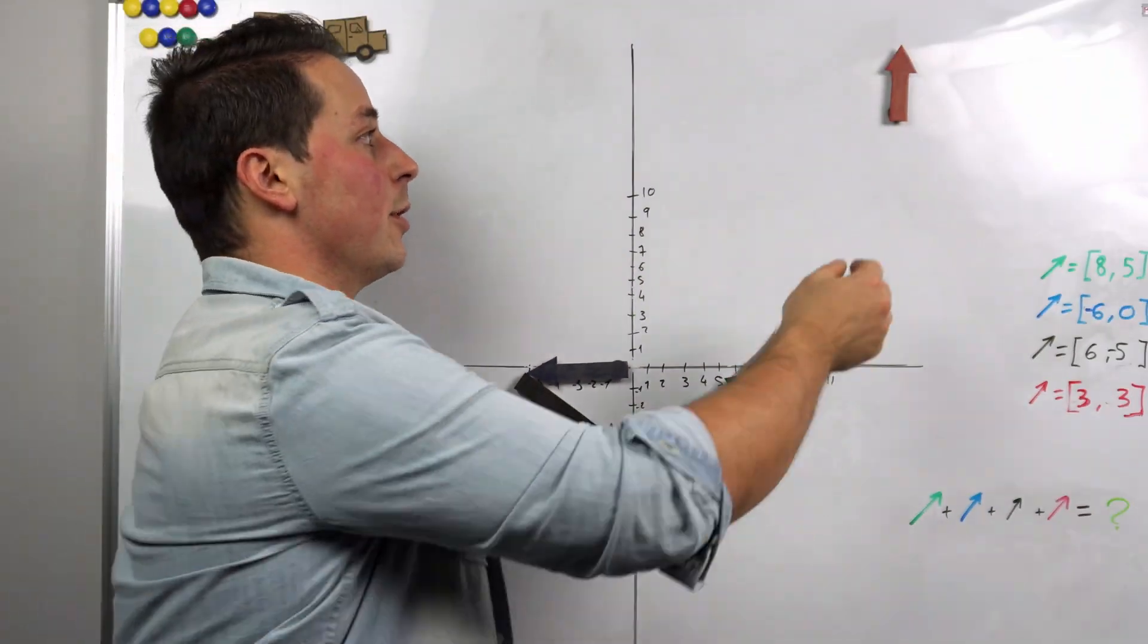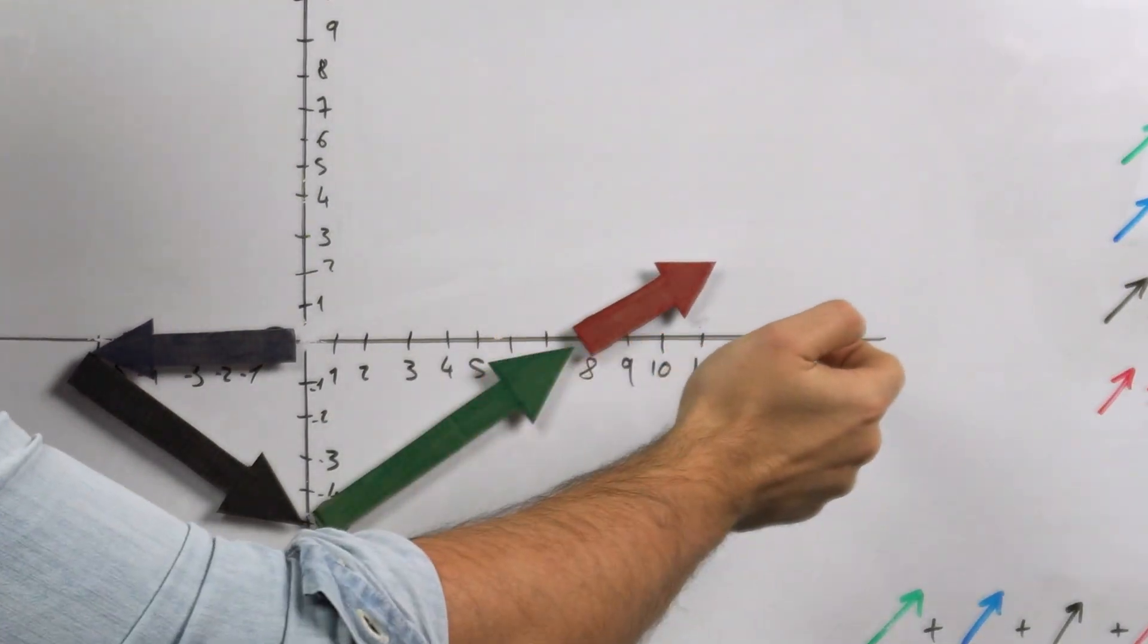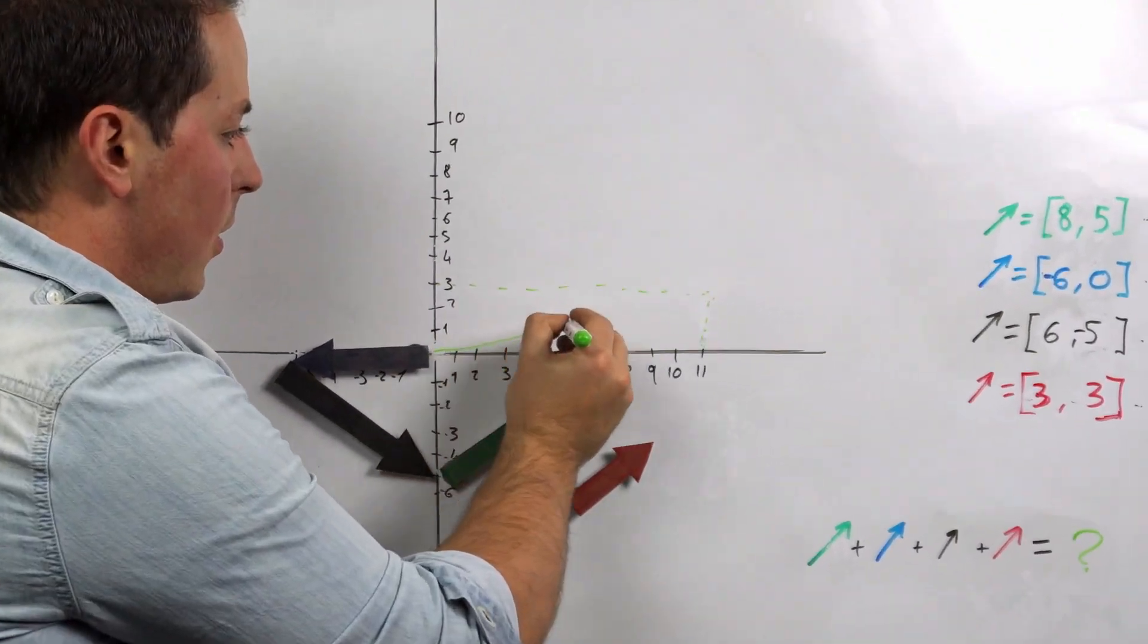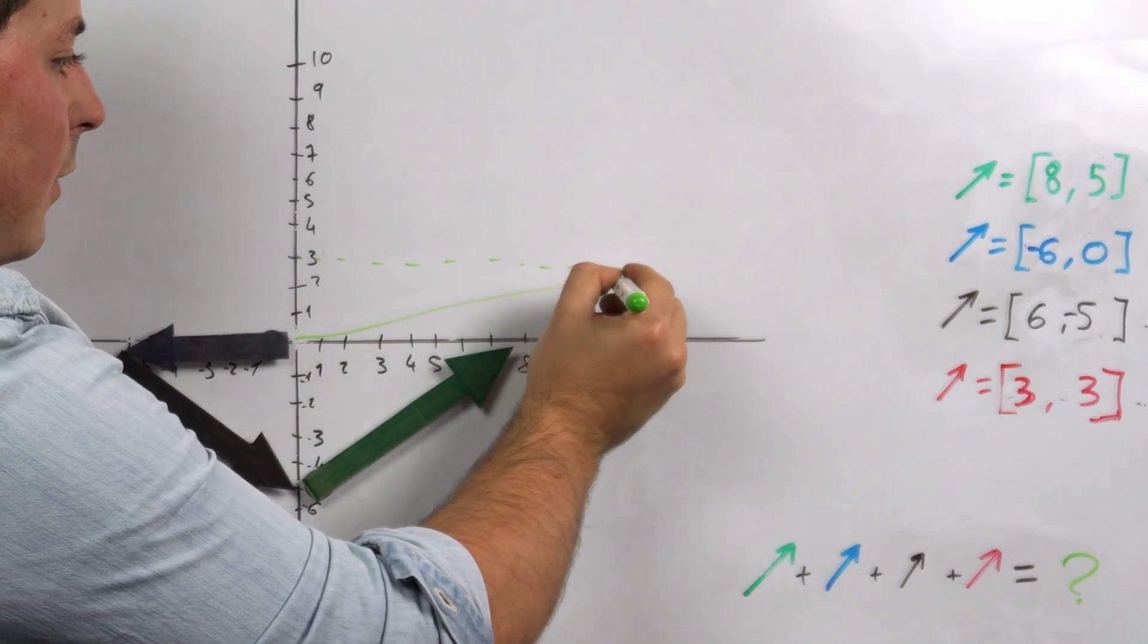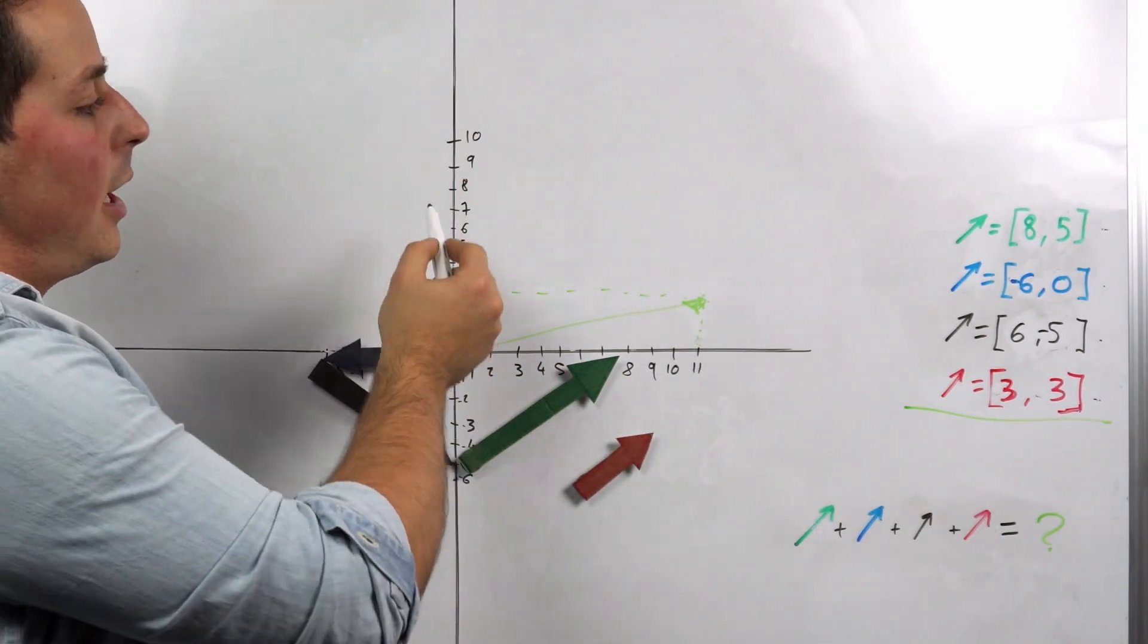And now I have no choice. I have to take the little red vector, which goes 3 to the right and 3 up as the component suggests. This is our resulting vector, a vector that would have coordinates 11 and 3.